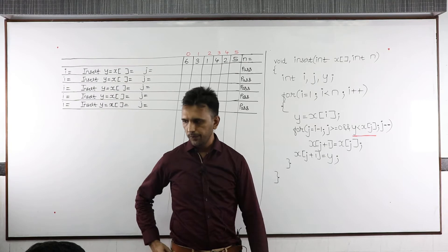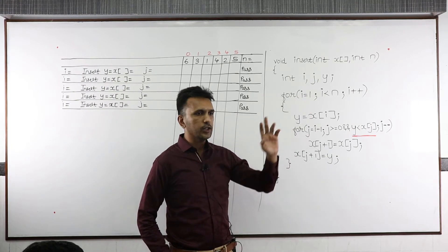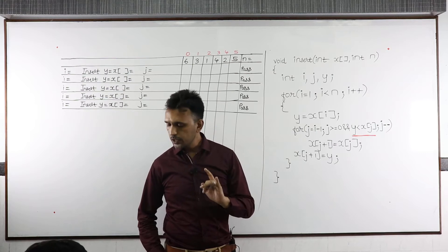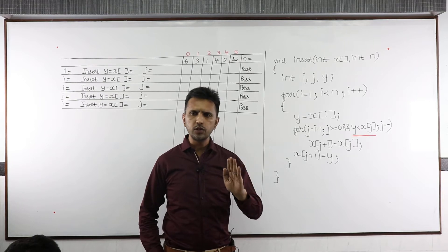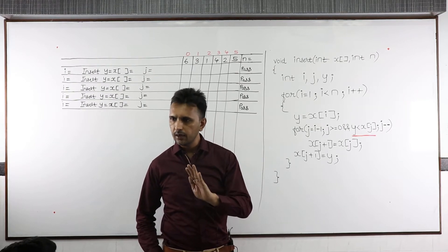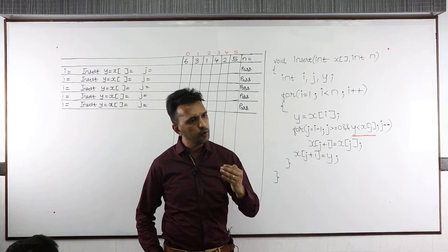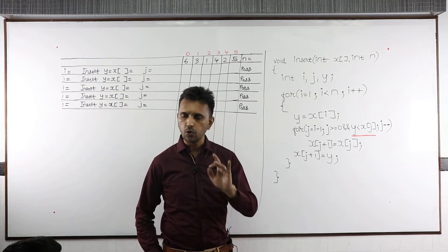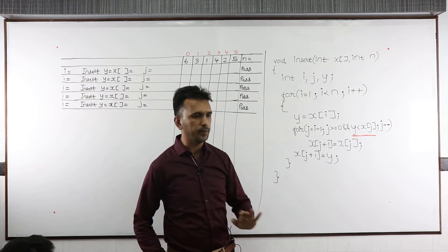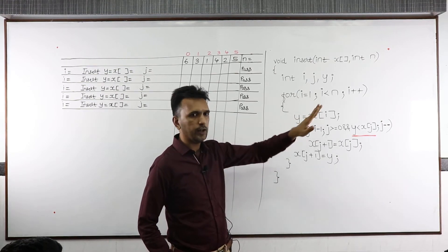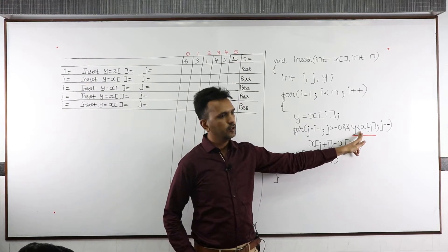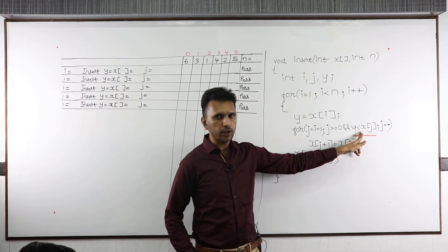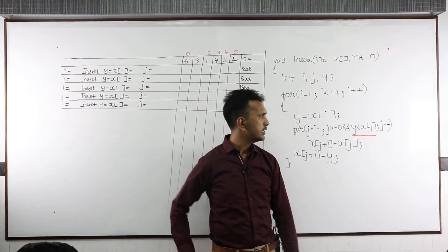Now you are going to copy function insert. When you copy function insert, copy it on a new left-hand side page. Pay attention while copying and look over here — what is this condition? Read it. I wrote it in black color; you write it in some other color — red, blue, green, whatever. The condition is: y less than x of j.